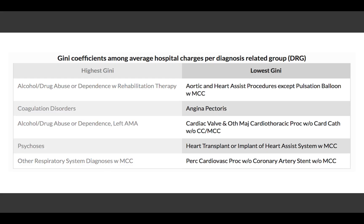Procedures that have really low Gini coefficients — meaning various hospitals charge pretty similar amounts — are really talking about procedures that are pretty standard. They're mostly heart procedures and mostly one-time events. For example, angina pectoris is just chest pain — someone being admitted for chest pain and then being released. It's a pretty standard sort of one-time event, so you can understand why we're seeing really similar charges among all the different hospitals for these.